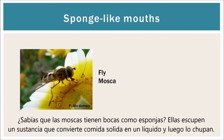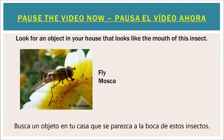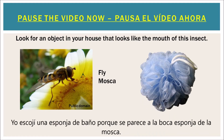Did you know that flies have mouths that look like sponges? Flies actually spit out a substance that turns their solid food into liquid, then they use their sponge mouths to drink it up. Pause the video now and look for an object in your house that reminds you of this insect's mouth. I chose a loofah because it reminds me of the fly's sponge mouth.